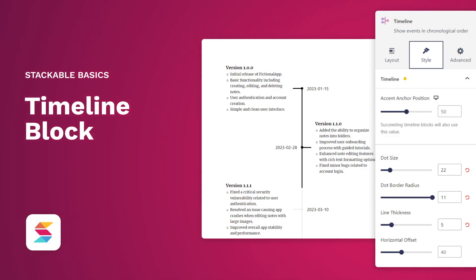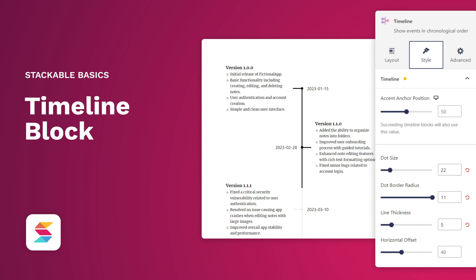Stackable's Timeline block makes it easy to communicate significant events on your website. Its layout and design options allow you to arrange events and present them in a visually digestible format. Impress your audience with clear and concise timelines that leave a lasting impact. If you liked this video, don't forget to give it a thumbs up and subscribe to our channel for more Stackable updates, tips, and tutorials. You can also join our Facebook community or visit our website for more information — we'll link them down below. We'll see you next time.